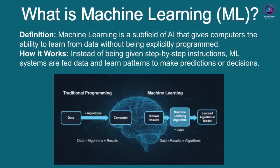Now, look at the right side for machine learning. Here, the paradigm shifts dramatically. Instead of giving the computer explicit rules, we provide it with a lot of data, along with the results we want to see.